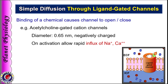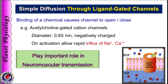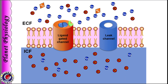Now we shall study diffusion through ligand gated channels. A ligand is a chemical that binds to a channel causing it to open or close. A very common example is the acetylcholine gated cation channel — their lumen diameter is 0.65 nm and these channels possess negative charge. When acetylcholine binds to them, they open and allow diffusion of mainly sodium, but also calcium, into the cell. These channels are found on the motor end plate and play an important role in neuromuscular transmission. Here is an animation to understand their working.